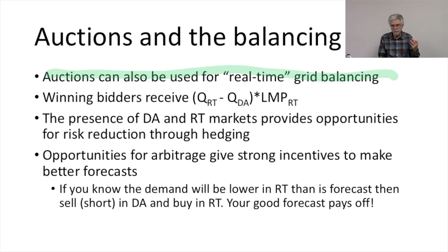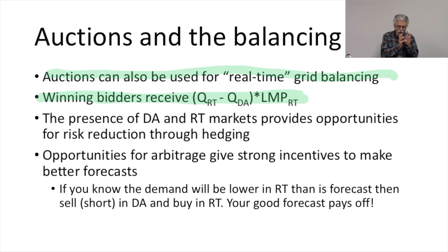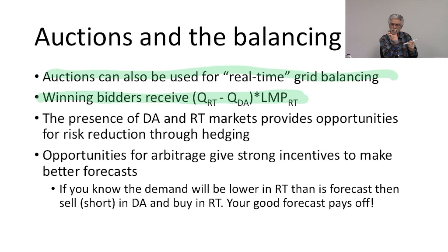Resources that are not committed, or are committed but not needed, can adjust at the margin based on the outcome of the real-time auction. Winning bidders in the real-time auction will receive the difference between the quantity offered in the real-time auction minus the quantity that was committed in the day-ahead auction, times the price in the real-time market. So what they're getting is the difference in quantity between the day-ahead market and the real-time market, multiplied by today's price.